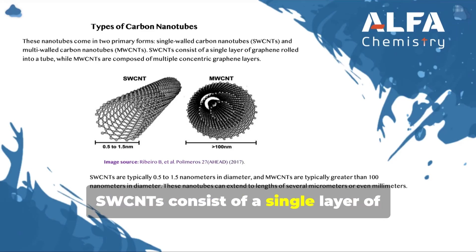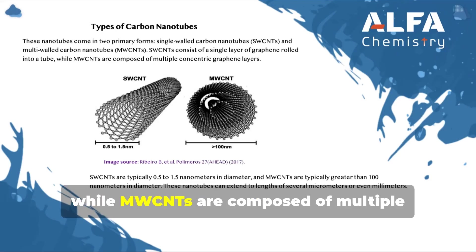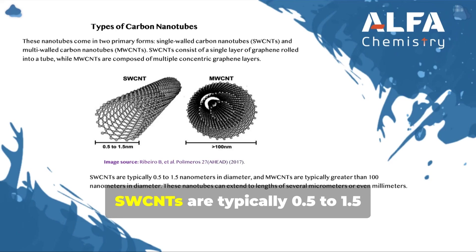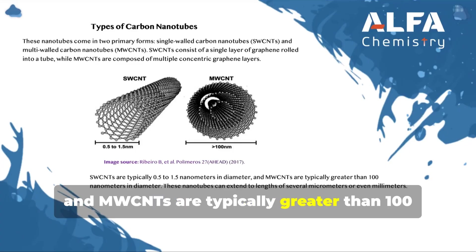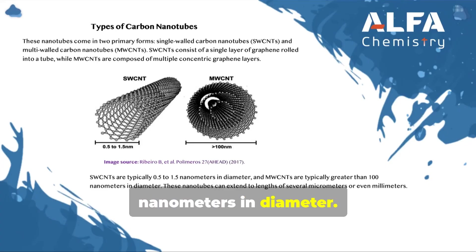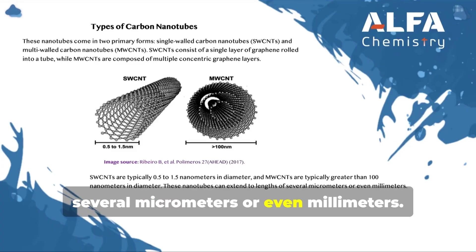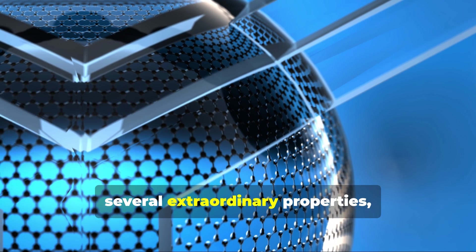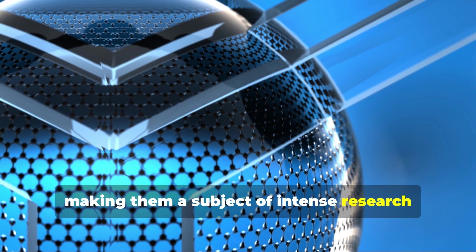SWCNTs consist of a single layer of graphene rolled into a tube, while MWCNTs are composed of multiple concentric graphene layers. SWCNTs are typically 0.5 to 1.5 nanometres in diameter, and MWCNTs are typically greater than 100 nanometres in diameter. These nanotubes can extend to lengths of several micrometres or even millimetres. The unique structure of CNTs imparts several extraordinary properties, making them a subject of intense research and development.